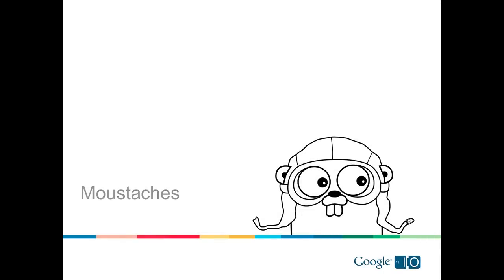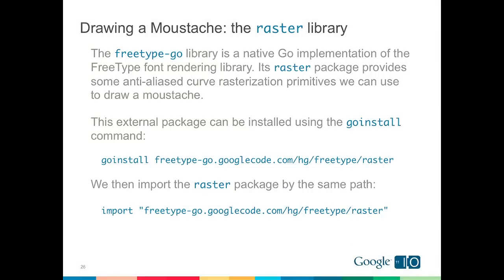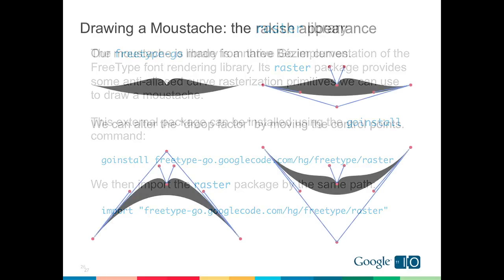Now let's talk about mustaches. To draw our mustache we'll use the FreeType Go library — a Go implementation of the FreeType font rendering library — which has a rasterization package called 'raster' that provides anti-aliased curve drawing primitives. We install it with go install, which is part of the Go distribution — a tool for automatically downloading and installing Go libraries. Once installed, we can import the package from the same name we go-installed it from.